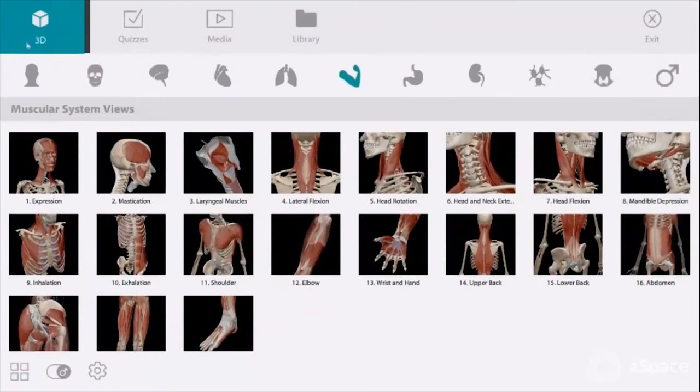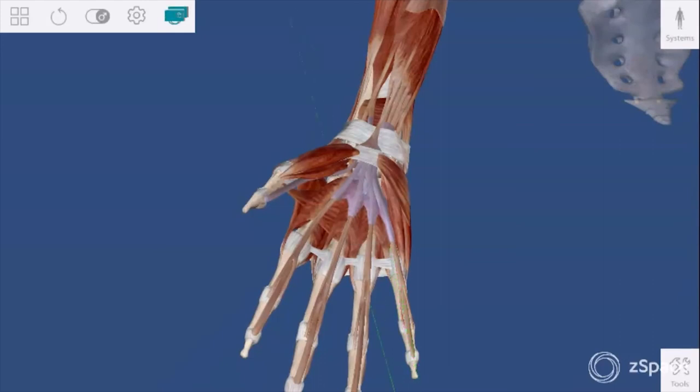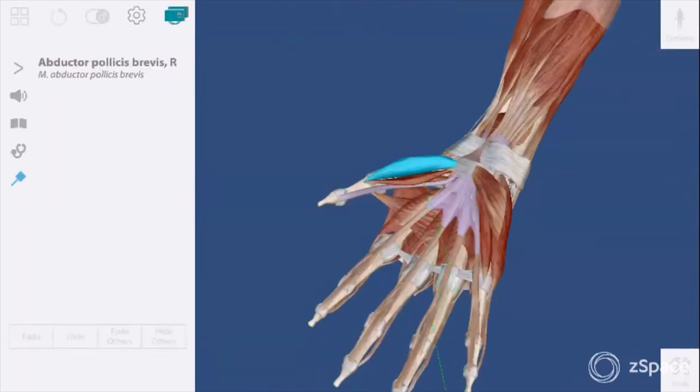Today we are going to cover carpal tunnel in a mini lesson using the Human Body Atlas application on the zSpace platform. I have opened up Human Body Atlas and found the wrist and hand model.